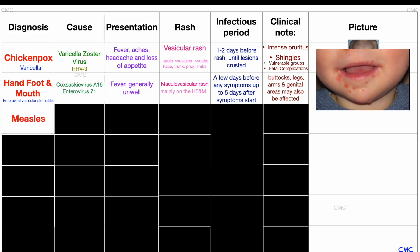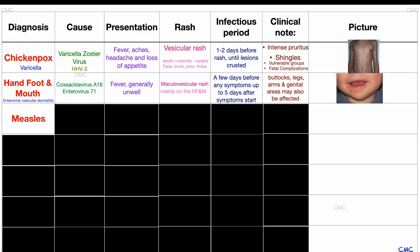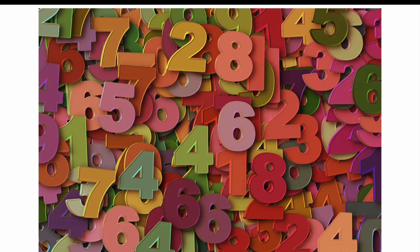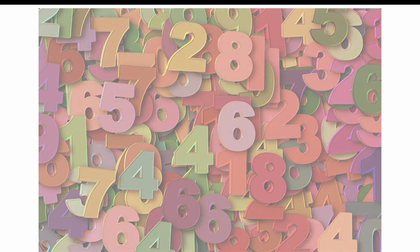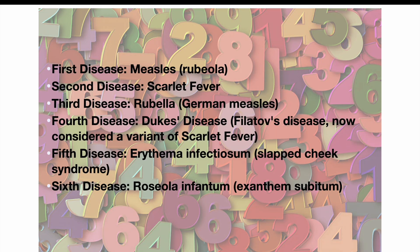Next, we are going to tackle measles, which historically has many other names such as rubeola, the English measles or the first disease. Before the proper understanding of virology and bacteriology, older textbooks utilized a numbering system for the most common six childhood rashes. The fourth disease is now understood to be a variant of scarlet fever, which was already listed as the second disease, so there are actually five rashes left to cover.